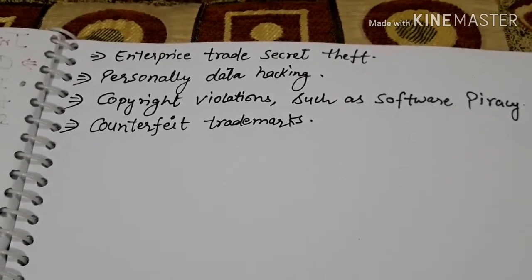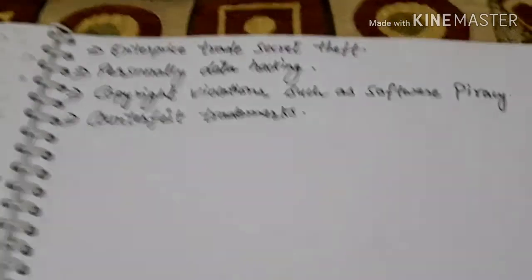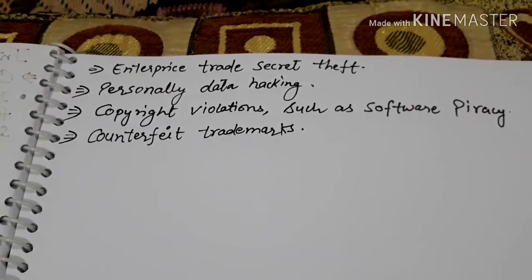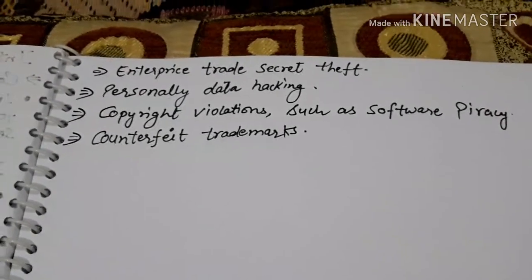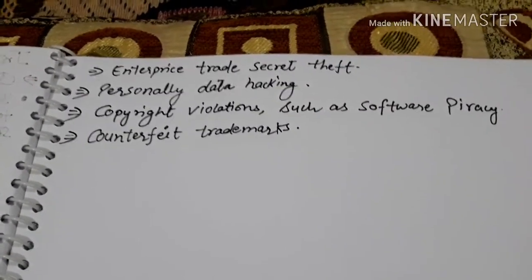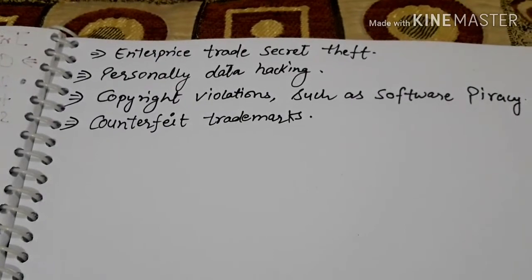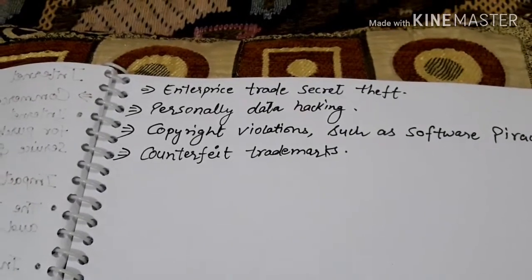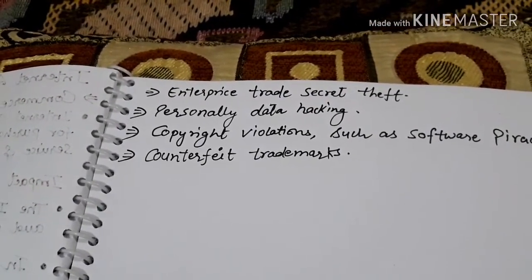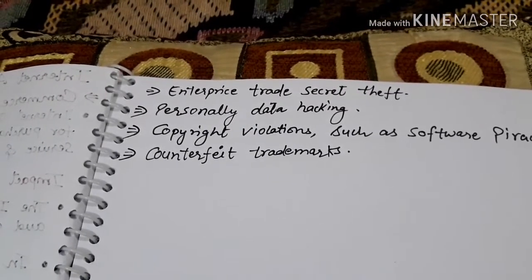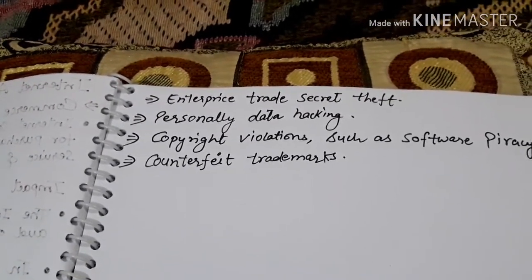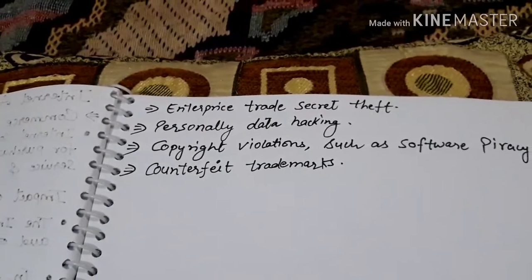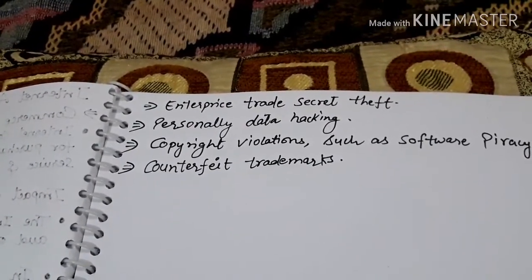The next is copyright violations and software piracy. What we do is get copyrighted content without permission — that is a crime. Then there is counterfeit trademark. In online business or online purchase, if you purchase from a fake page or after someone has hacked your personal data, that also counts as a crime. So all these things come under crime on the internet.